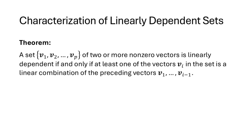This theorem codifies these ideas: a set of two or more nonzero vectors is linearly dependent if and only if at least one of the vectors in the set is a linear combination of the preceding vectors. So to determine whether a set is linearly dependent, we can walk along the set one vector at a time, checking whether each vector is a linear combination of the vectors before it. If that ever happens, the set is linearly dependent. If we reach the end and none of the vectors was ever a linear combination of the preceding ones, then the set is linearly independent.